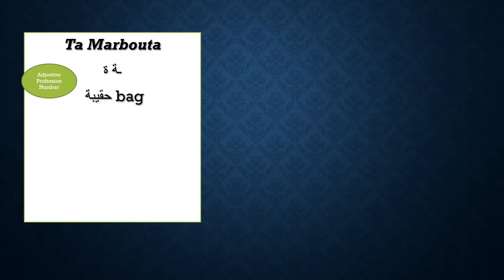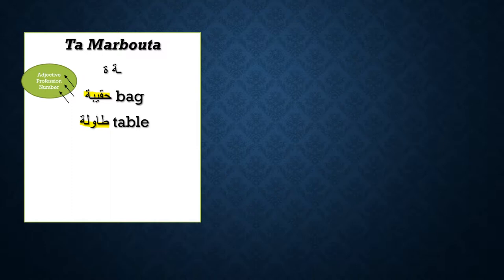Let me make some simple examples on ha and ta marbuta. If I say 'haqiba,' haqiba is a feminine noun and it remains feminine. Can I make haqiba masculine? The answer is no, because haqiba is not an adjective, not a profession, not a number. So haqiba is a feminine noun and it remains feminine — you have to add two dots, it's ta marbuta. 'Tawila' is a feminine noun, it remains feminine. 'Zawja' is a feminine noun — anytime it's a feminine noun that means ta marbuta, we need two dots at the end.